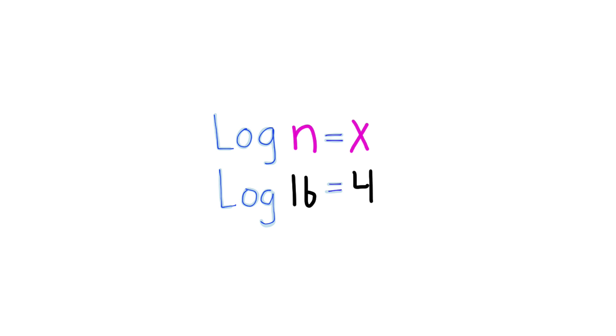So log 16 is 4 because 2 to the fourth is 16. And log 64 is 6 because 2 to the sixth is 64. And log 256 is 8 because 2 to the eighth is 256.